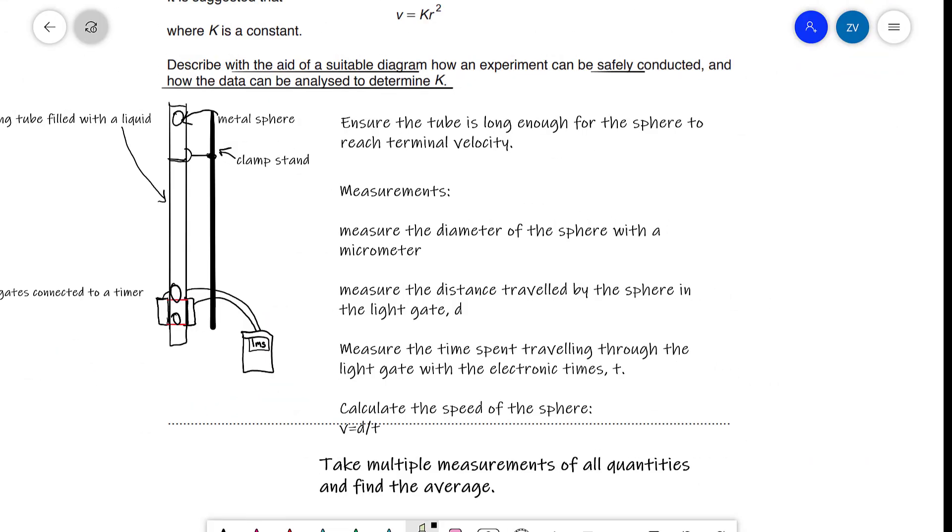So here is our list of measurements. First off, we need to measure the diameter of the sphere with a micrometer. I'm expecting the sphere could be a little bit smaller than a few centimeters. And anything that's smaller than a few centimeters, in order to reduce our percentage uncertainty, it is wise to use a micrometer to measure its size. We're also going to be measuring the distance traveled by the sphere within the light gate, and I've called that distance d. On the diagram, this distance d is simply this distance that I've just shown in the diagram.